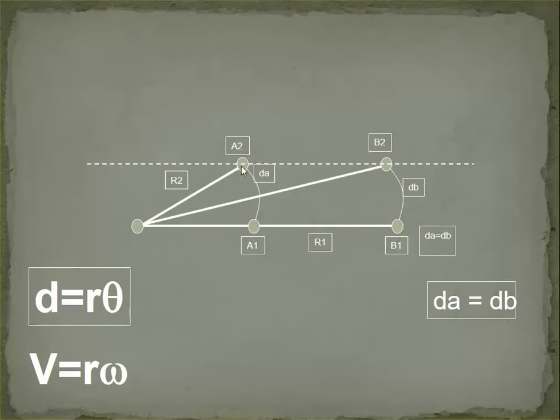So DA, or the distance from A1 to A2, is the same as the distance from B1 to B2. So you're swinging either a long bat or a short bat, but the linear distance is the same.